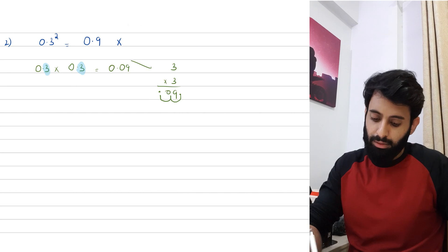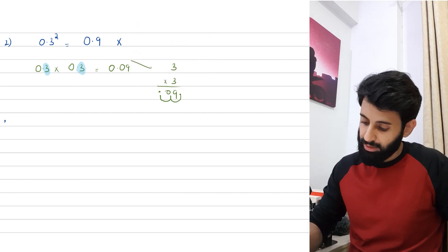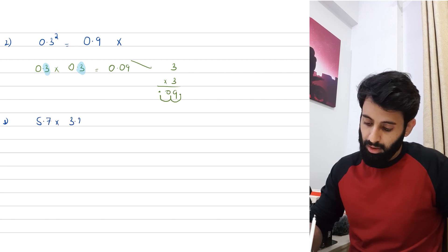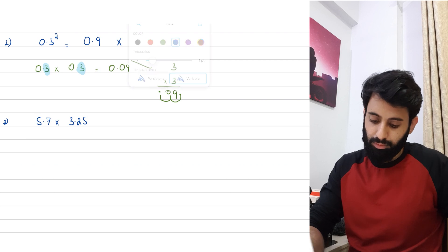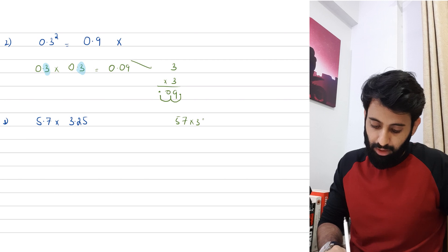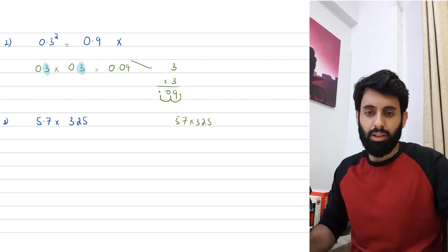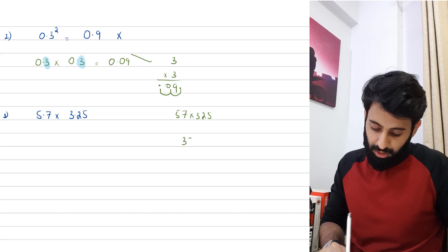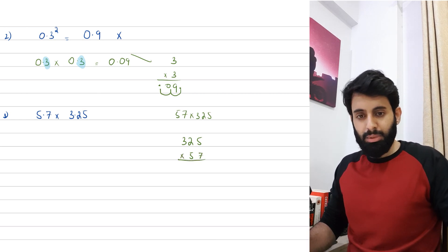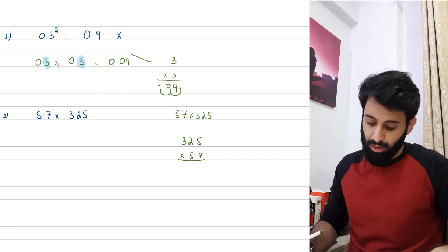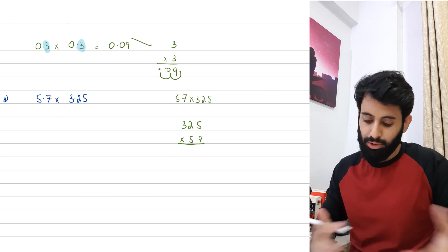Now enough about squares, let's see how we can deal with other decimals. Let's say you're given 5.7 multiplied by 3.25. Forget about the decimal for now and let's do 57 times 325. In this case what I would prefer is to write 325 first and then multiply it by 57. So that means 325 times 57. With addition and subtraction we would fill up the missing places by 0, but here you don't have to do that.